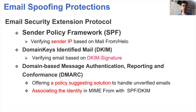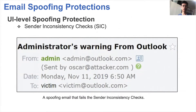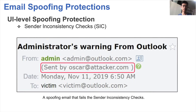To defend against email spoofing attacks, various email spoofing protection mechanisms have been proposed under standards. SPF, DKIM, and DMARC are widely used. The SPF protocol verifies the sender IP based on the MAIL FROM or HELO header. The DKIM protocol verifies email based on a digital signature. The DMARC protocol associates the identity in the MIME FROM with the results of SPF and DKIM. Finally, if an email fails SPF, DKIM, or DMARC verification, it would most likely be dropped into the spam box. For UI-level spoofing protection, some email services display a security indicator alerting the receiver that the actual email sender may not be the displayed one. We call this protection measure the sender inconsistency check.